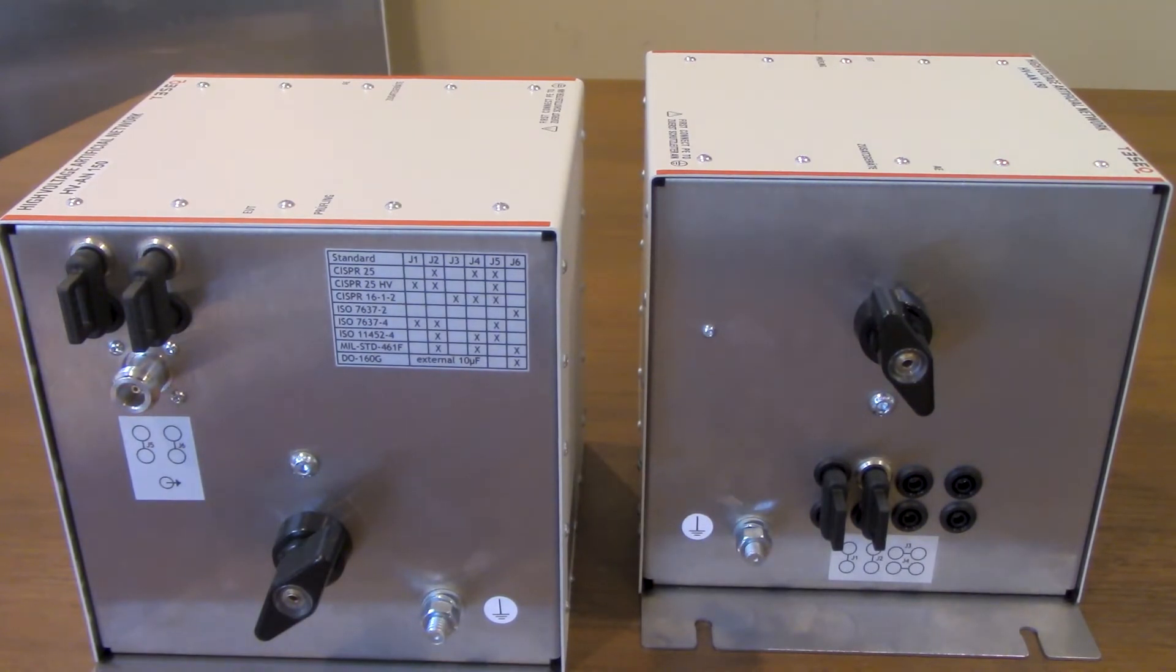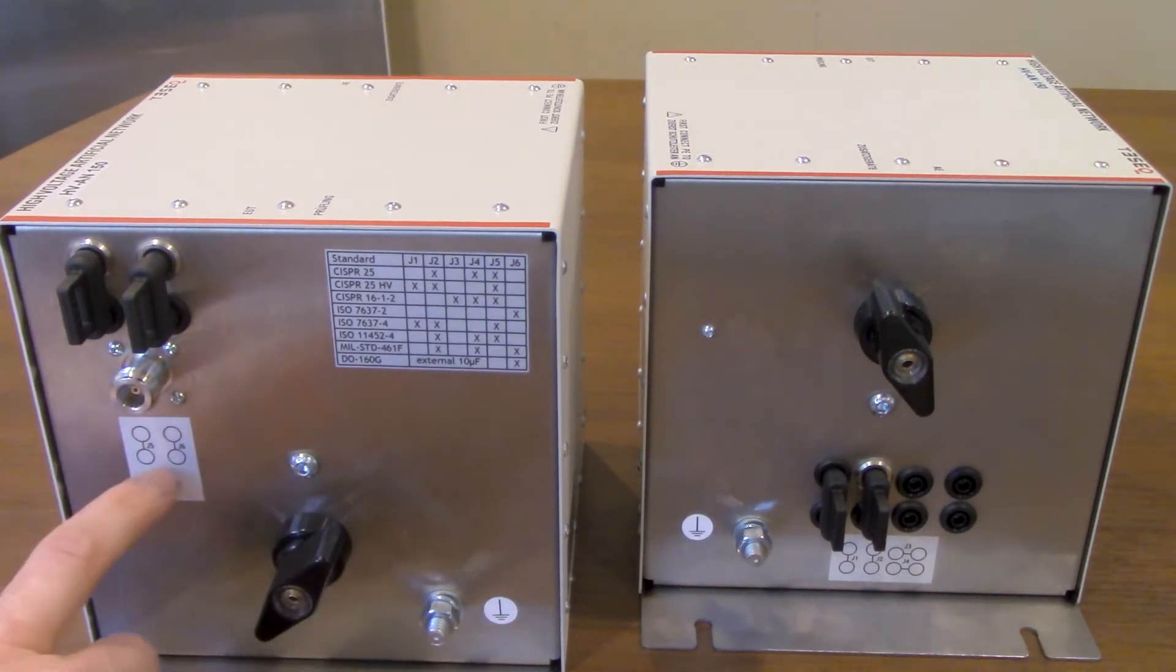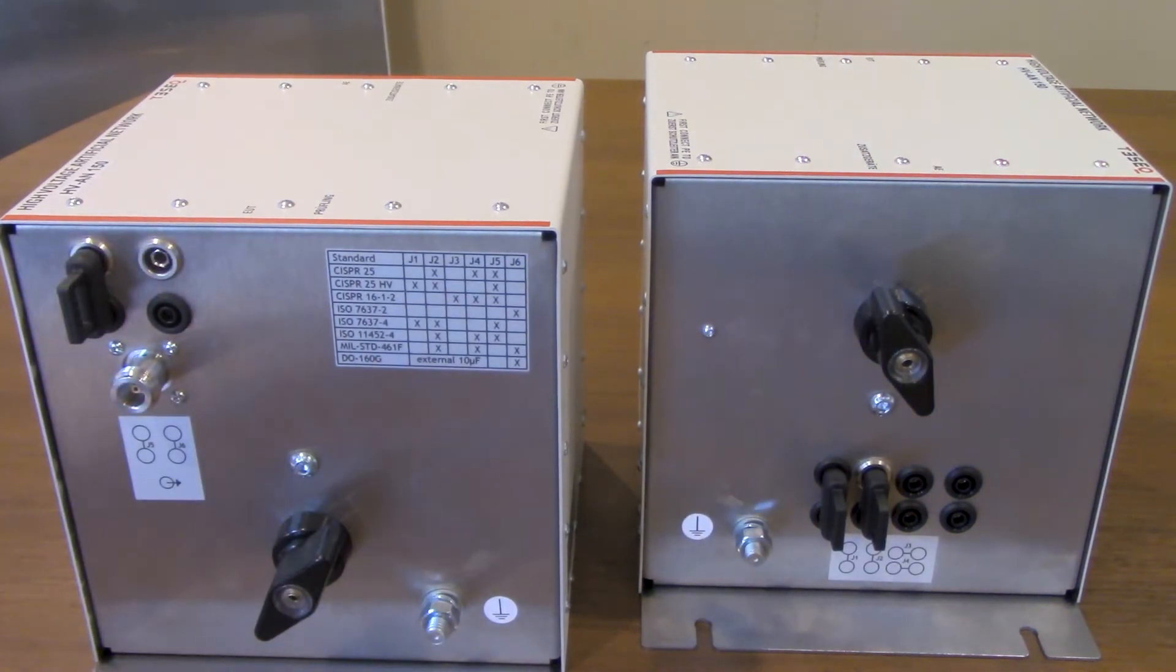Now we're going to reference jumper 3 and 4, there's nothing in those so we're good there. We're going to reference jumpers 5 and 6 so you see those two on this side of the unit. It doesn't look like we need jumper 6 for this test so we're going to remove it and you're ready to go.